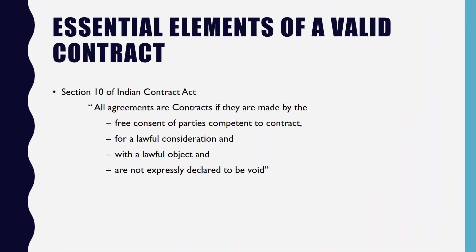According to Section 10 of the Indian Contract Act 1872, all agreements or contracts, if they are made by the free consent of parties, competent to contract for a lawful consideration and with a lawful object and are not expressly declared to be void. In this definition, they have mentioned six essential elements of a valid contract. The first one is agreement.